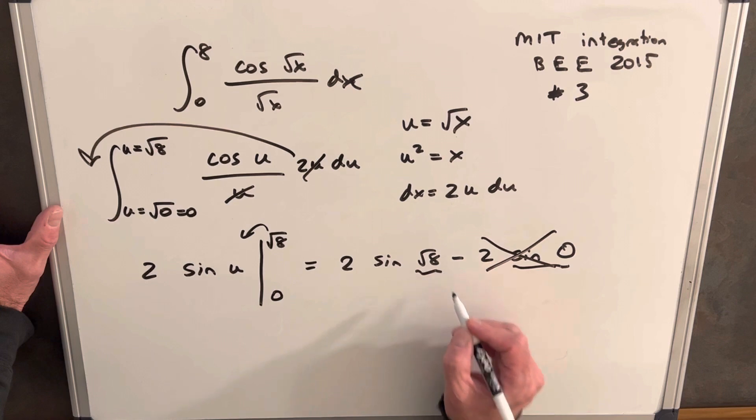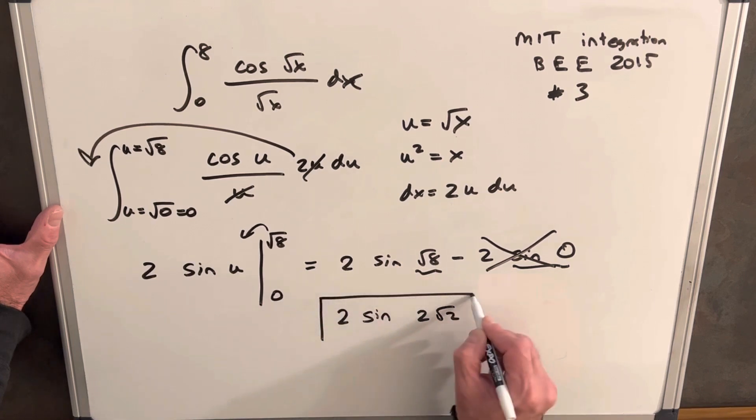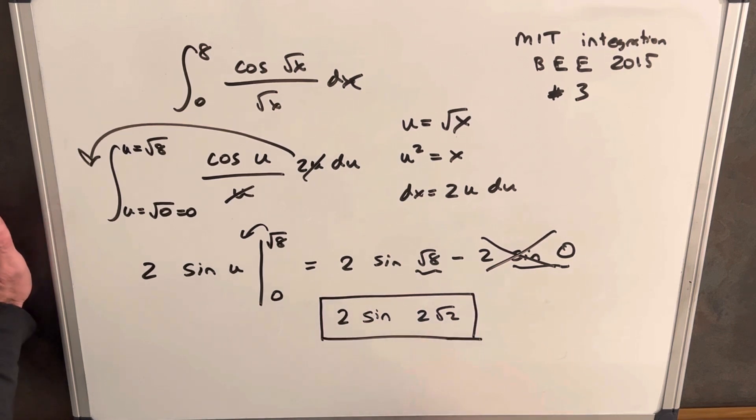I'm just going to rewrite my square root of 8 as 2 square root of 2. So we're going to have 2 sine 2 square root of 2. And that's going to be our final answer. Pretty quick one.